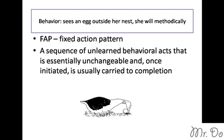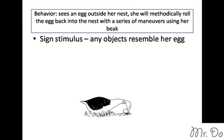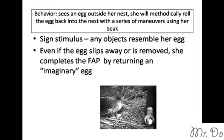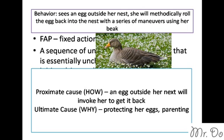Here's another FAP example, dealing with the gray lag goose. Whenever the gray lag goose sees an egg outside her nest, she will methodically roll the egg back into the nest using her beak. Her sign stimulus — the external stimulus causing this behavior — is anything that resembles her egg. Scientists also found that even if the egg slips away or is removed, she will still complete the FAP, as if returning an imaginary egg. How is this behavior caused? An egg outside her nest invokes her to retrieve it. Why? It's simply to protect her eggs — it's a parenting method.